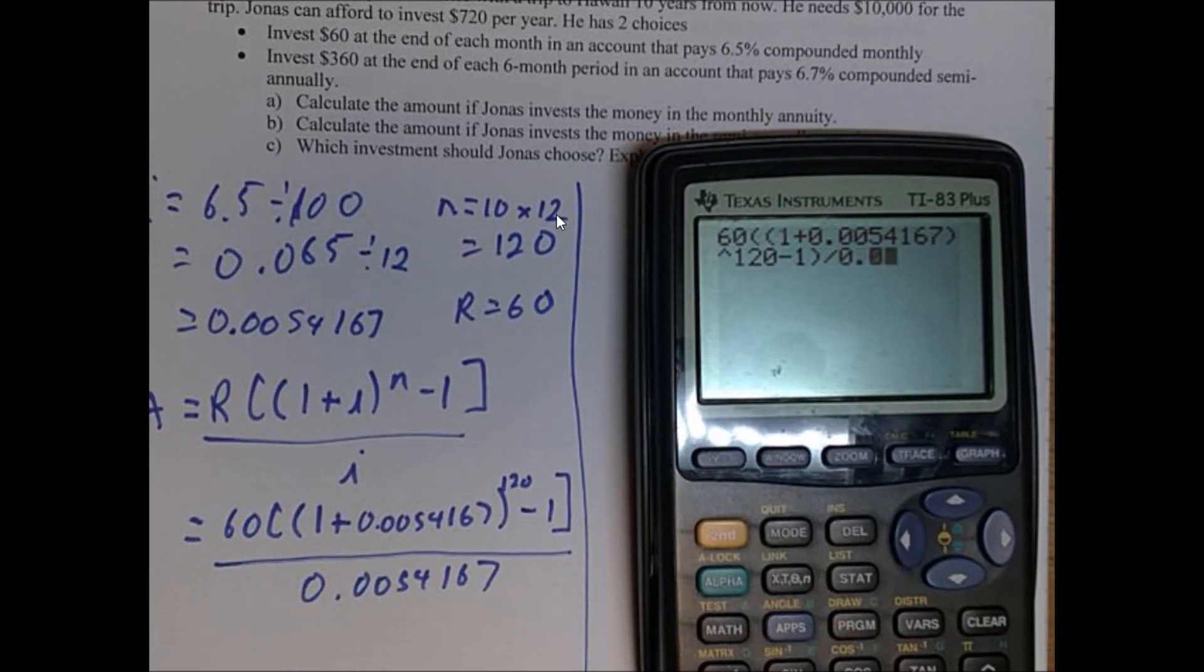The power of 120 minus 1. Close that bracket. Divided by 0.0054167. So all that's put in the calculator. And we'll hit equals.